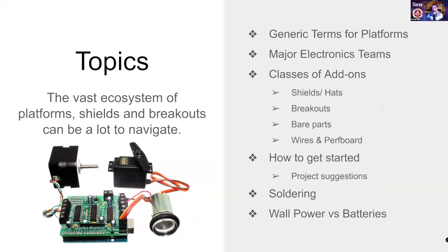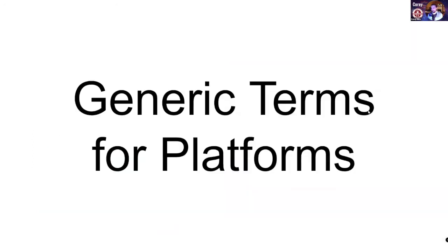We're going to go through some generic terms that are really helpful to know as we get going. We'll talk about the three major electronics teams — they're not competitive, they're collaborative camps, but they're different. Then we're going to go through the classes of add-ons that you can have to get your electronics going and how you can attach those things beyond just the Arduino itself or just a Raspberry Pi. And then we'll go through some suggestions on soldering, wall power, and batteries.